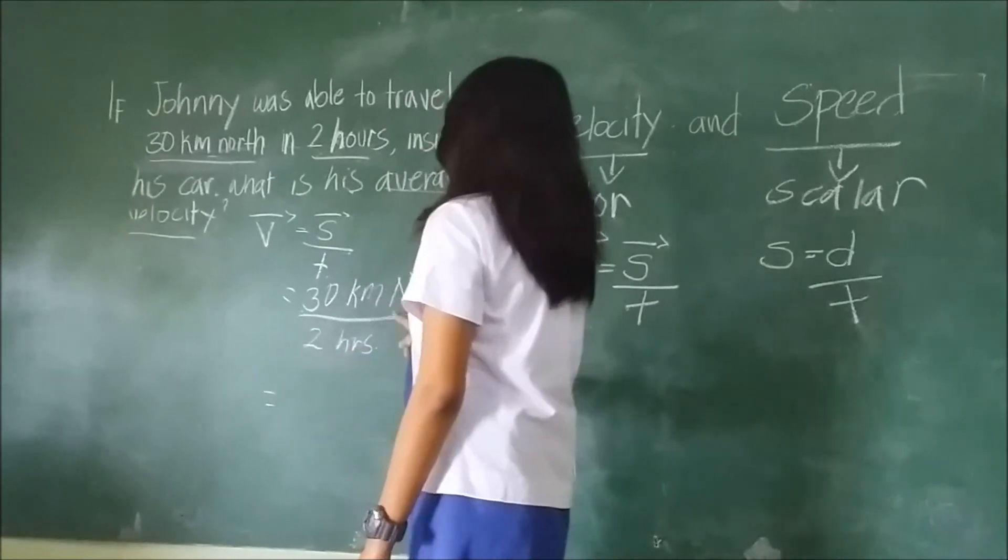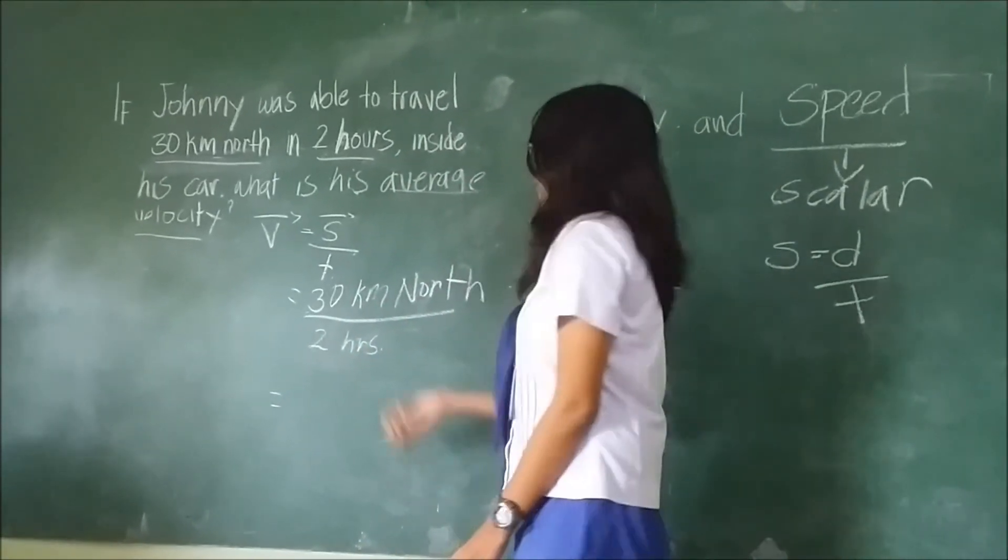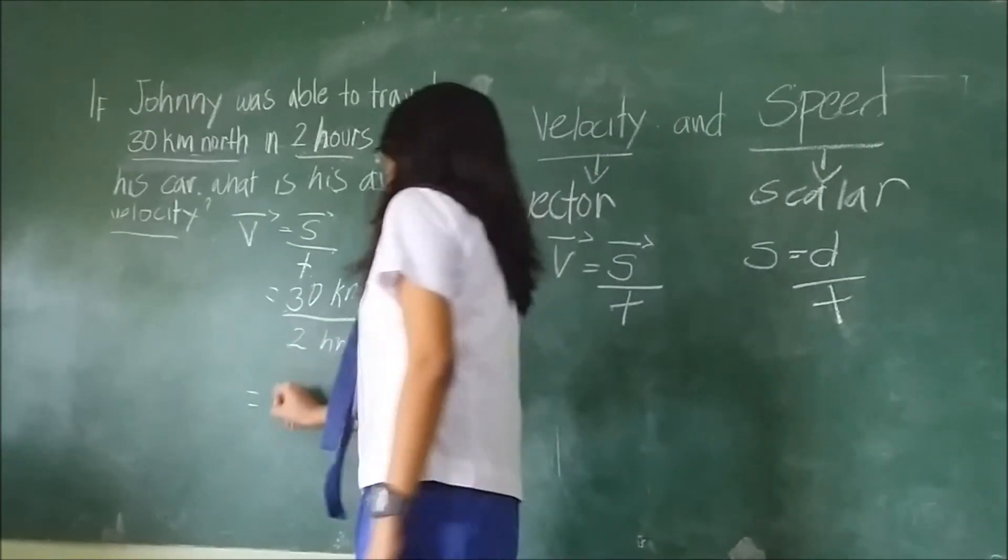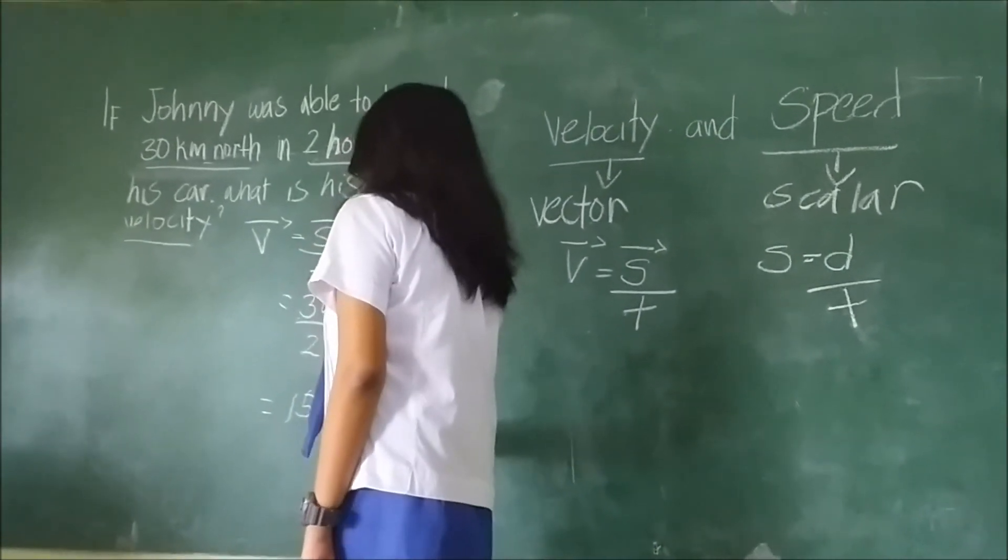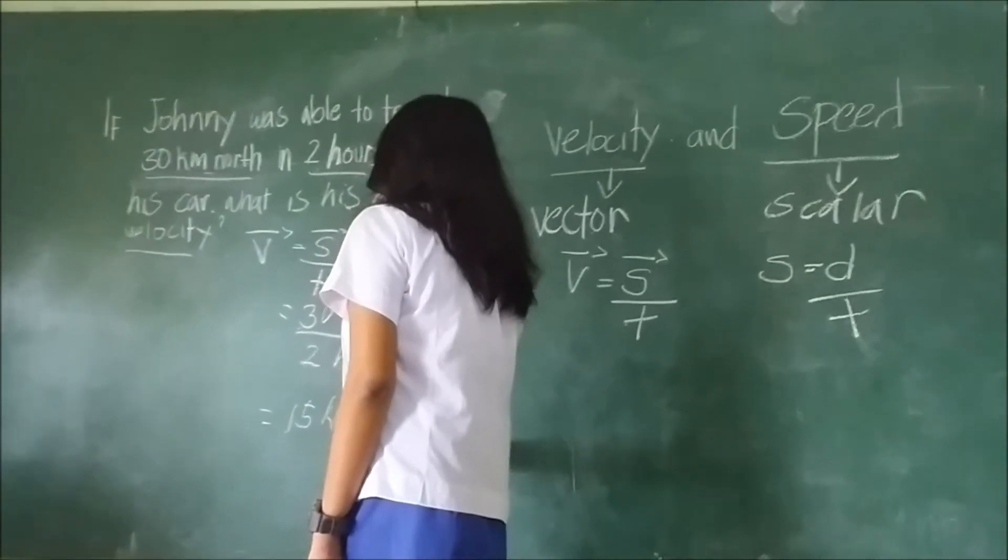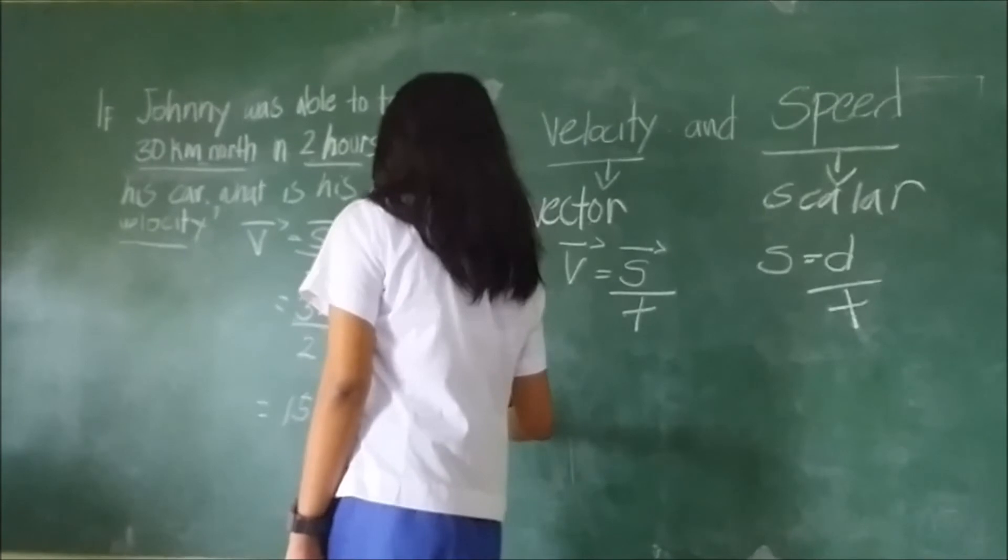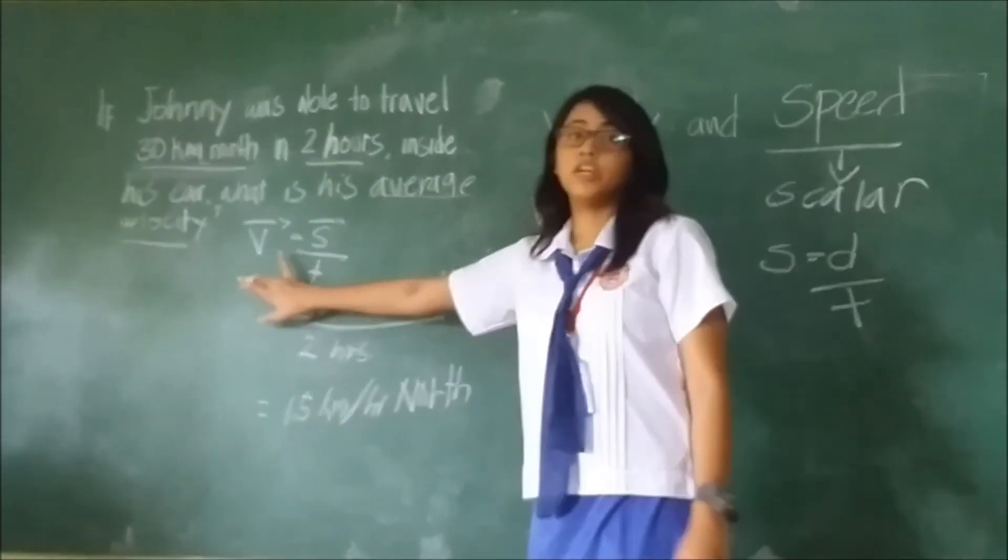So, 30 kilometers north over 2 hours, or 30 kilometers north divided by 2 hours, is 15 kilometers per hour north. That's it, you already found the average velocity.